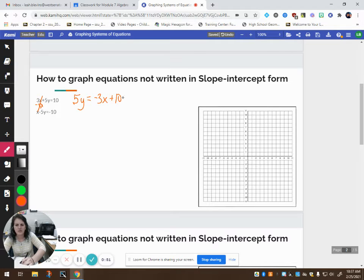So now I want to get y all by itself. It's being times by 5, so to undo that multiplication, I use division. So I want to divide every single term. So I'm left with y equals negative 3 fifths x, and 10 divided by 5 can be simplified to a positive 2.